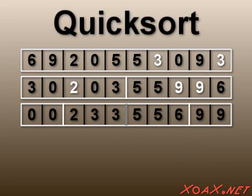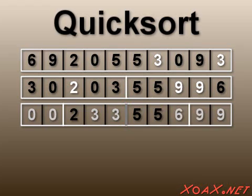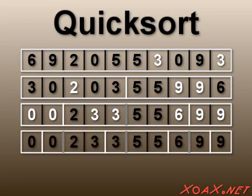At this point, we have 4 sections. The partition step is performed on each section with the pivots 0, 3, 6, and 9. The new splits are shown again in white.